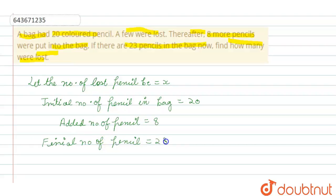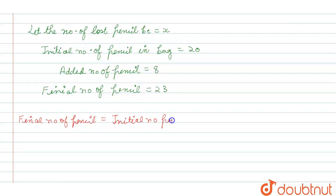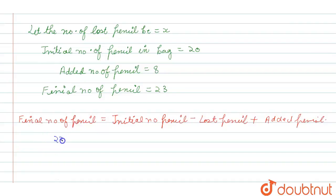The final number of pencils is 23. Now, the final number of pencils is equal to the initial number of pencils minus the lost pencils plus the added pencils. So, final number of pencils are 23, initial number of pencils were 20, lost pencils were x, and added pencils is 8.